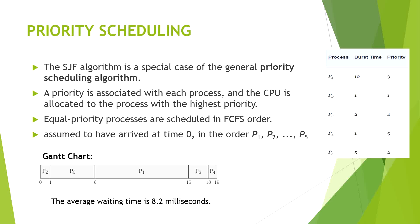In the previous video we discussed about SJF, which is shortest job first scheduling. In this video we will discuss about priority scheduling — we will allocate the resources to the process which has the greatest priority.